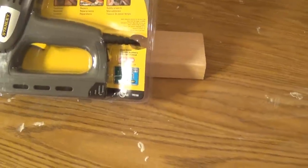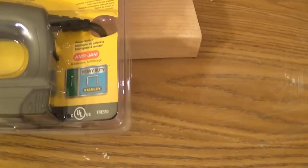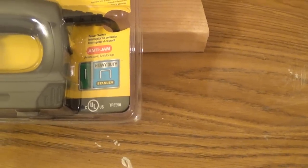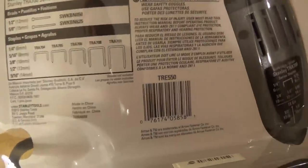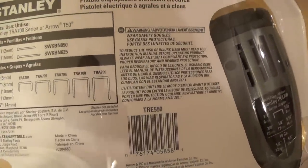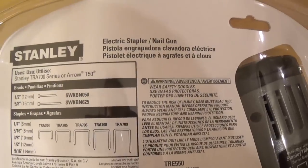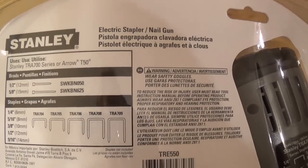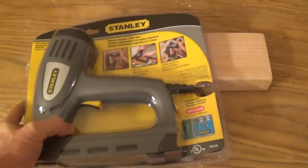It does staples and brads. This is a TRE 550 stapler. Looking on the back, it can do from 1/4 to 9/16 inch staples and a couple sized brads: half an inch and 5/8 inch brad.